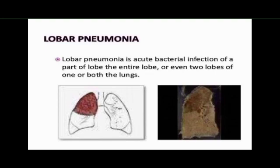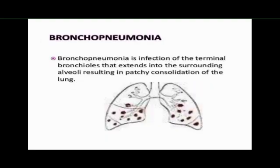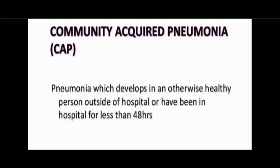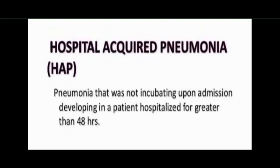Lobar pneumonia is an acute bacterial infection which affects one or more lobes of the lungs. Bronchopneumonia involves more patchy alveolar consolidation associated with bronchial infection, often affecting both lobes of the lungs. Community-acquired pneumonia (CAP) occurs within less than 24 hours of hospitalization.